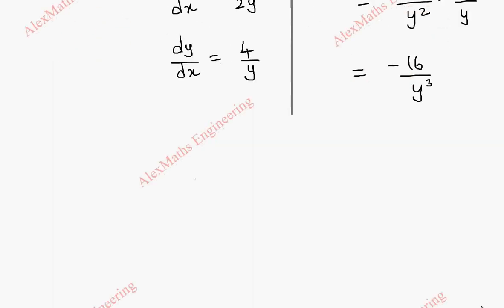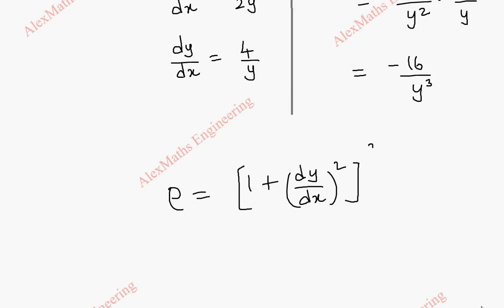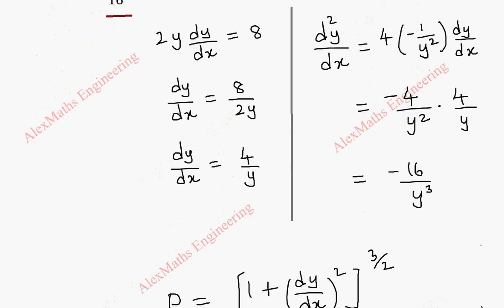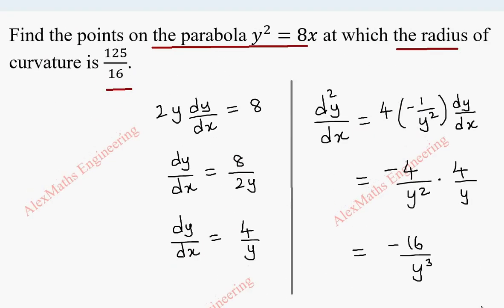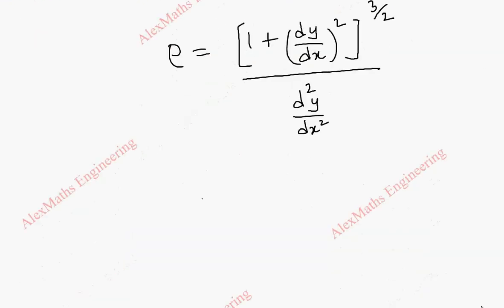The radius of curvature rho is given by: rho equals (1 plus (dy/dx)²) to the power 3/2, whole divided by d²y/dx². We set this equal to 125 by 16, the given value of the radius of curvature.